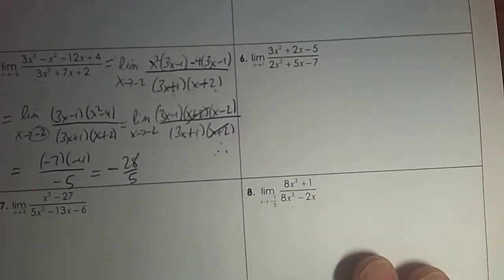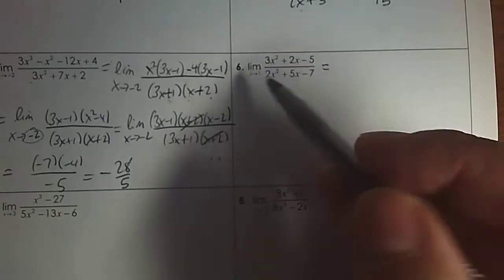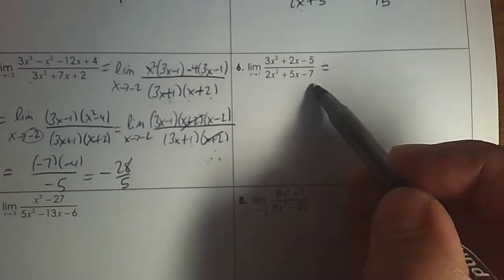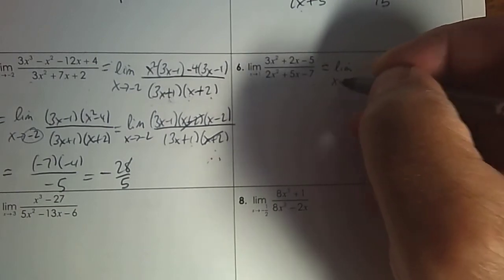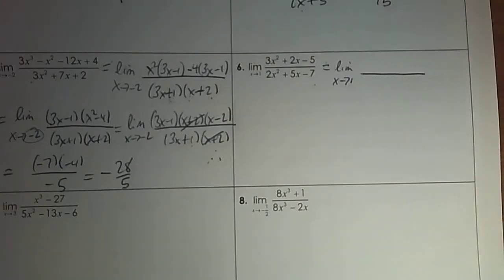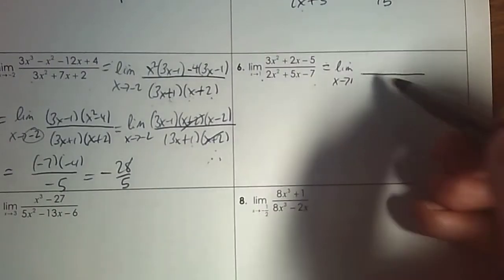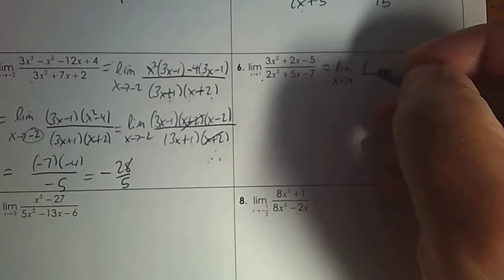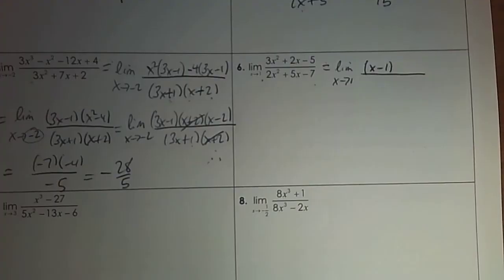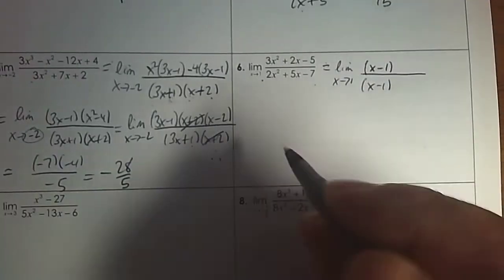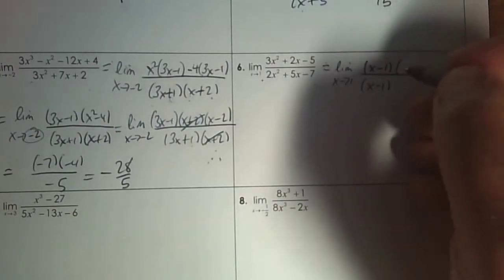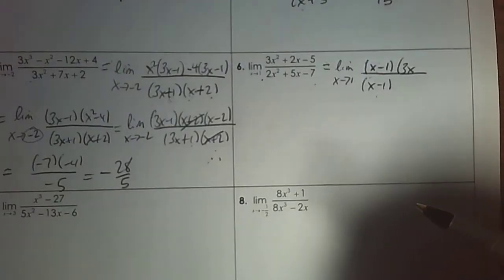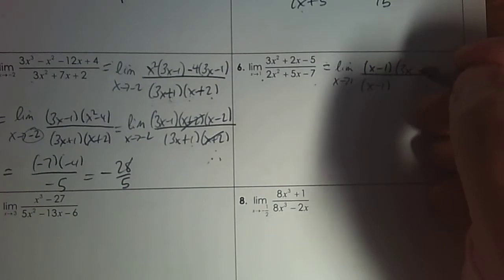Can you find a limit using some algebra? Step 1: plug in 1, and it's 0. Plug in 1, and it's 0. Now, can you find the 0 to divide out? I'm going to work backwards: if positive 1 leads me to 0 over 0, then x subtract 1 must be the factor, top and bottom. So x times 3x is 3x squared, and negative 1 times positive 5. The numerator, I'm going to factor by grouping.